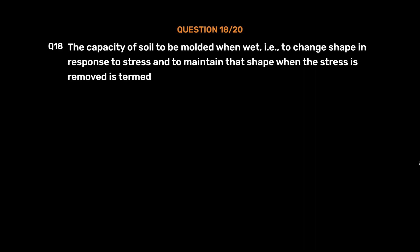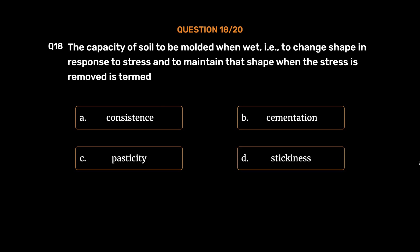Question number 18. The capacity of soil to be molded when wet, to change shape in response to stress and to maintain that shape when the stress is removed is termed: option A, Consistence; option B, Cementation; option C, Plasticity; option D, Stickiness. The correct answer is option C, Plasticity.